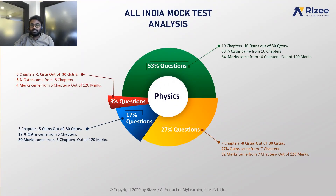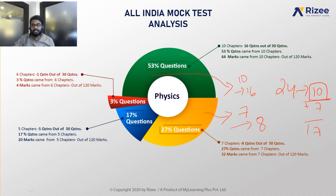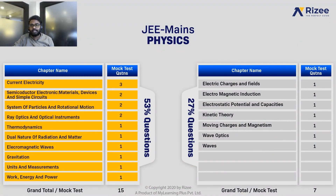Let us discuss the Feb 7th All India Mock Test Analysis. In this mock test, the distribution is based on previous year analysis. Out of the top 10 chapters, nearly 16 questions — that is 53% of questions — are asked from these 10 chapters, and another 7 chapters contribute 8 questions. So 24 questions come from these 17 chapters combined. You have to be thoroughly prepared with these top 10 chapters.